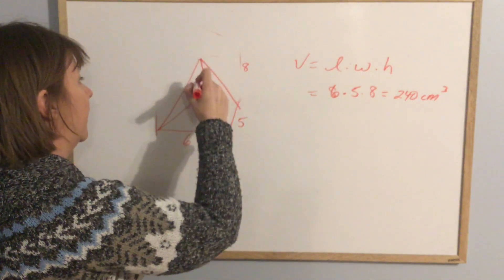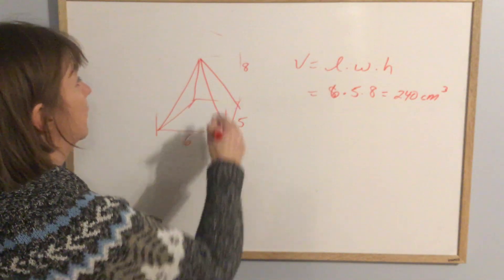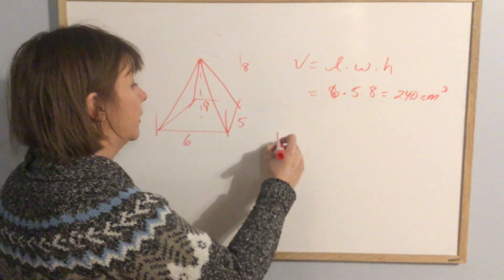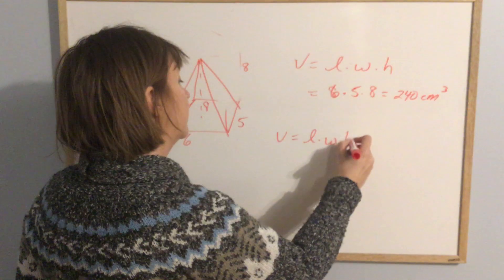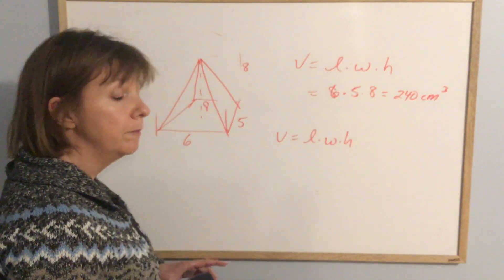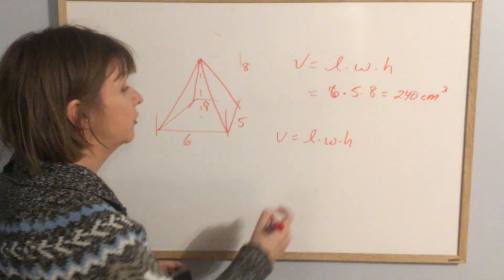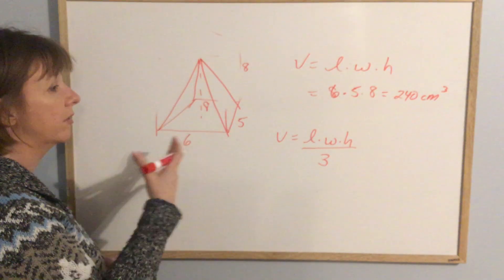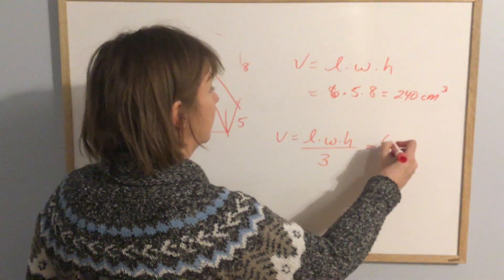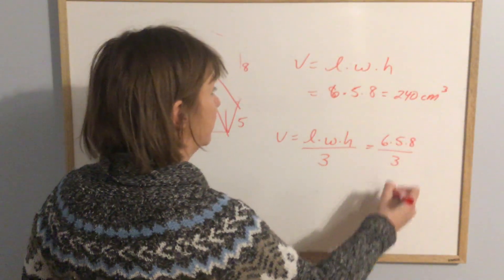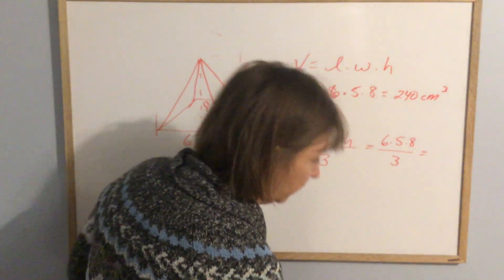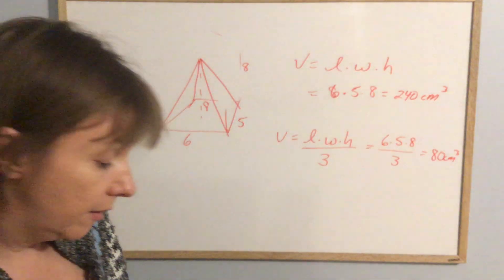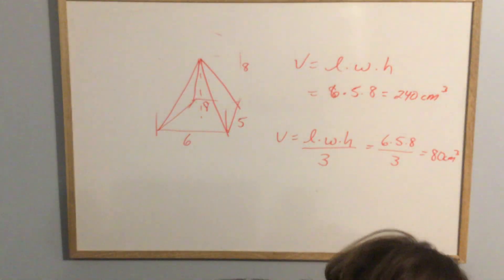So if the height is still eight, this side still six, and this side still five, the pyramid volume would be six times five times eight divided by three — because we took off part of the space from the rectangular prism. That gives 80 cubic centimeters.